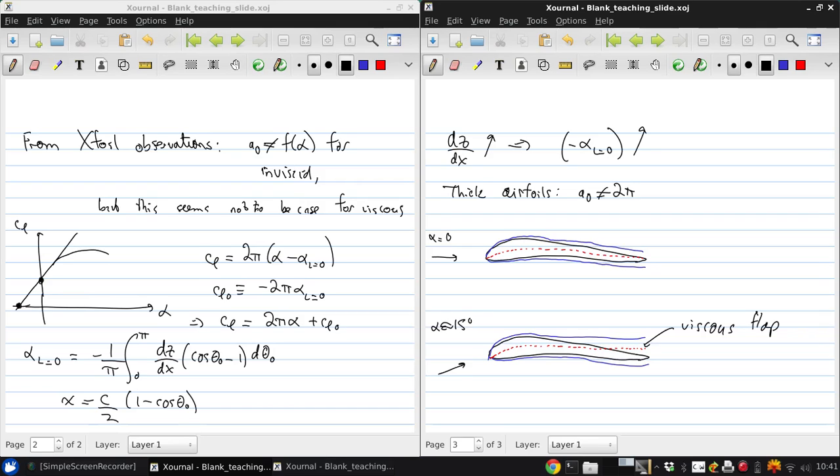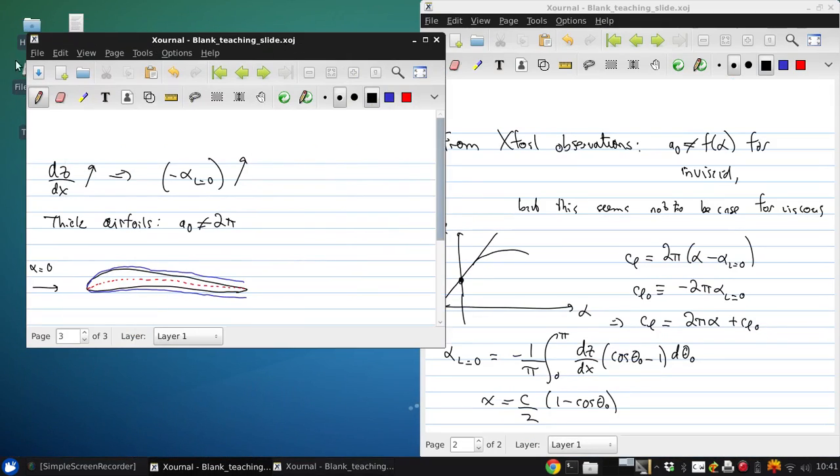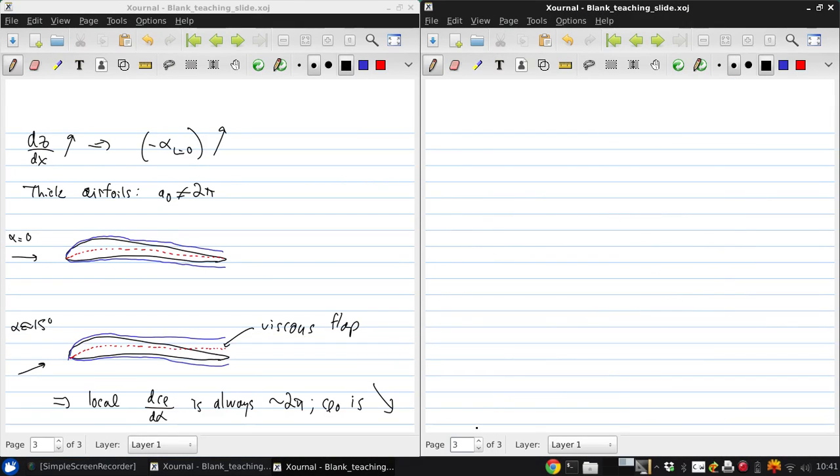So a way to interpret this is that the local dC_l/dα is always about 2π, say if the boundary layer is kept fixed. But it's C_l0 that's changing. In fact, it's decreasing as α becomes large. So the airfoil plus displacement body is being decambered by the viscous boundary layer growth.